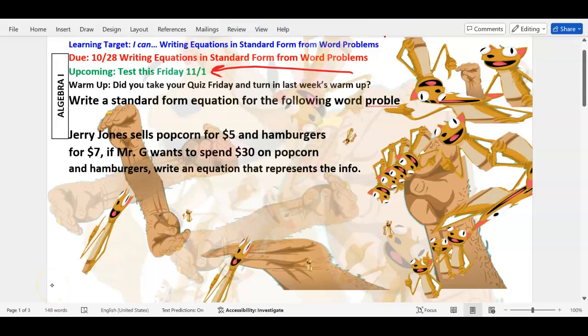Yesterday we learned how to write a word problem in standard form. What is standard form? AX plus BY equals C. The X and the Y are on the same side and it equals some constant C. That's different than what we did before with slope-intercept form.